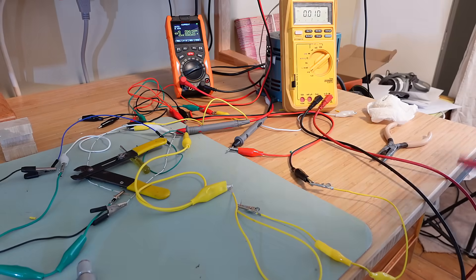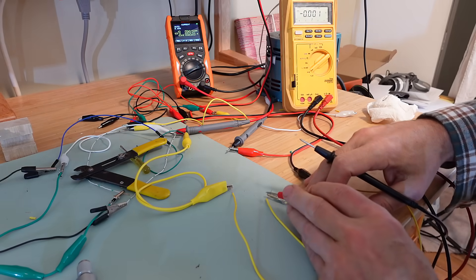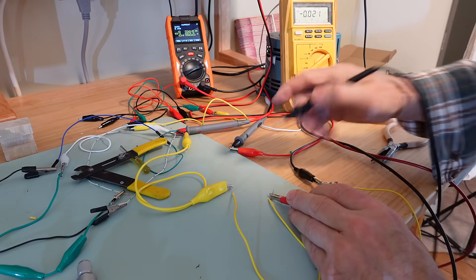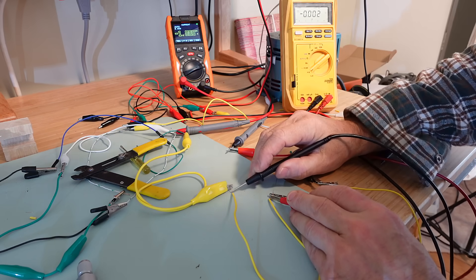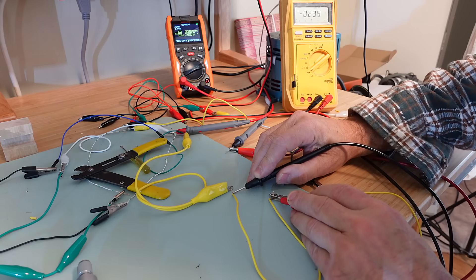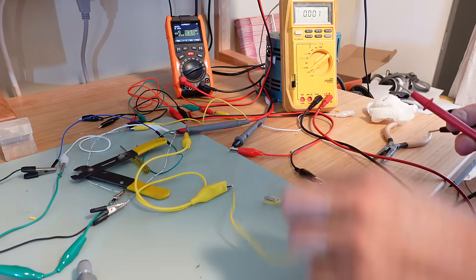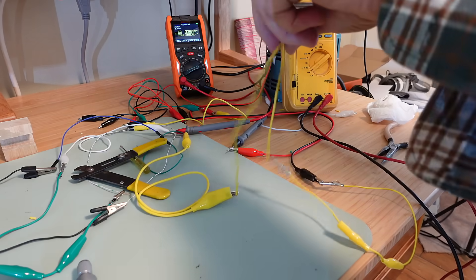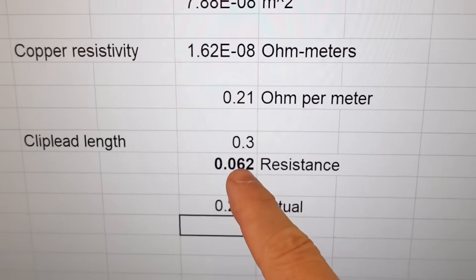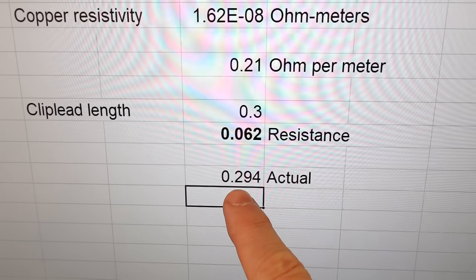So, with 1 ampere passing through the wire, I'm gonna measure the voltage on the wire between the clips where I'm applying the current. So, my contact resistance won't matter. And, I'm getting 294 millivolts. So, this wire has 294 milliohms. But, my calculations say 62 milliohms. So, I'm off by quite a lot.